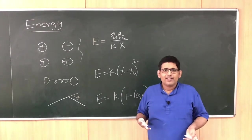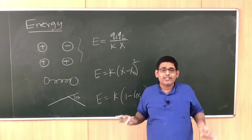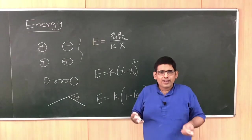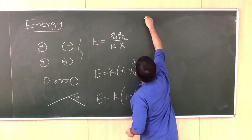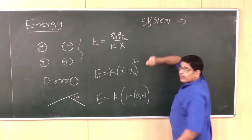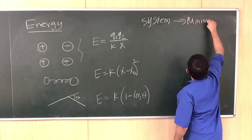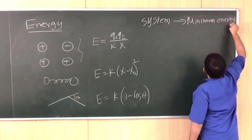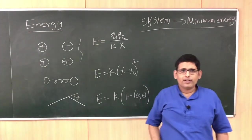Early on in science, in the seventeen hundreds and eighteen hundreds, what people understood was they derived a general principle. The general principle is that every system will try to go to its minimum energy. So every system will tend to go to a state which has minimum energy. This is the general principle that people understood.